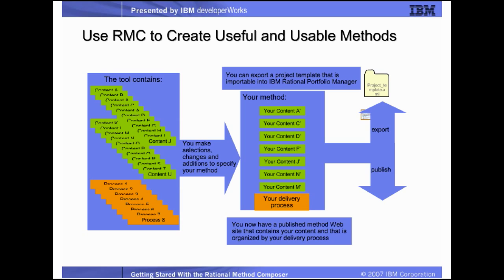You use RMC to configure your method, using the content and process definitions in the library, extending them with your own additions. Some have compared using RMC to writing a research paper. A library contains books. In the tool, the library has plugins containing the method content and process definitions, usually used in a read-only fashion — just like books in a library. A research paper is based on a selection of books, sections in books, and additional content. In the tool, your selection of plugins and plugin content is called the configuration.